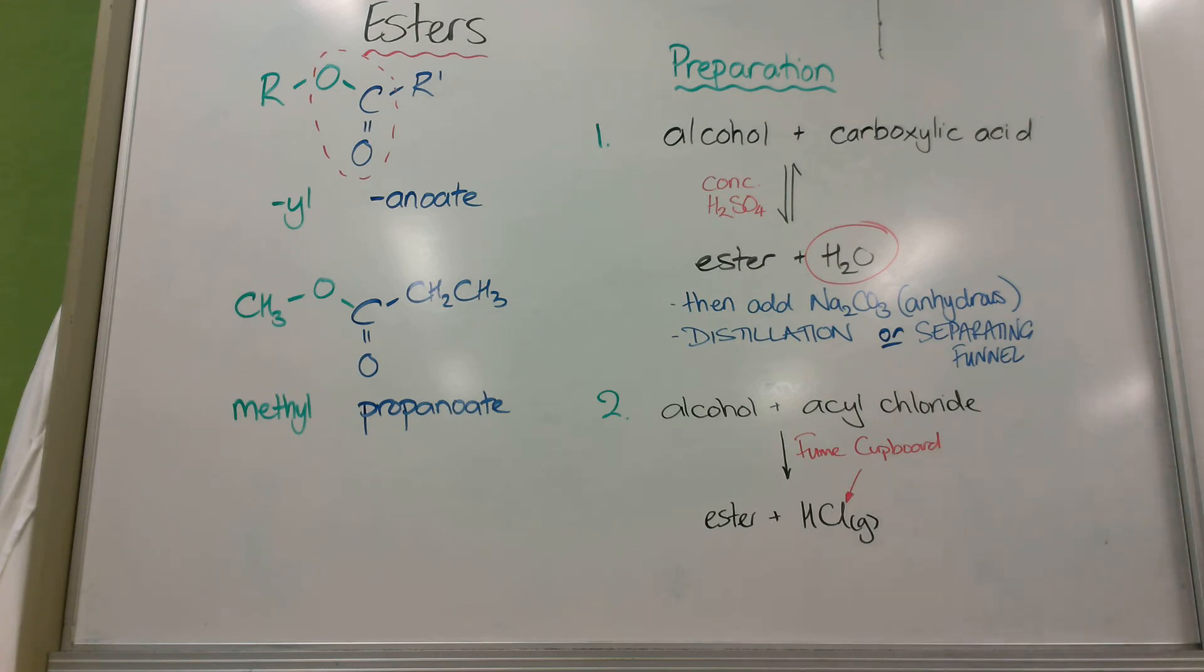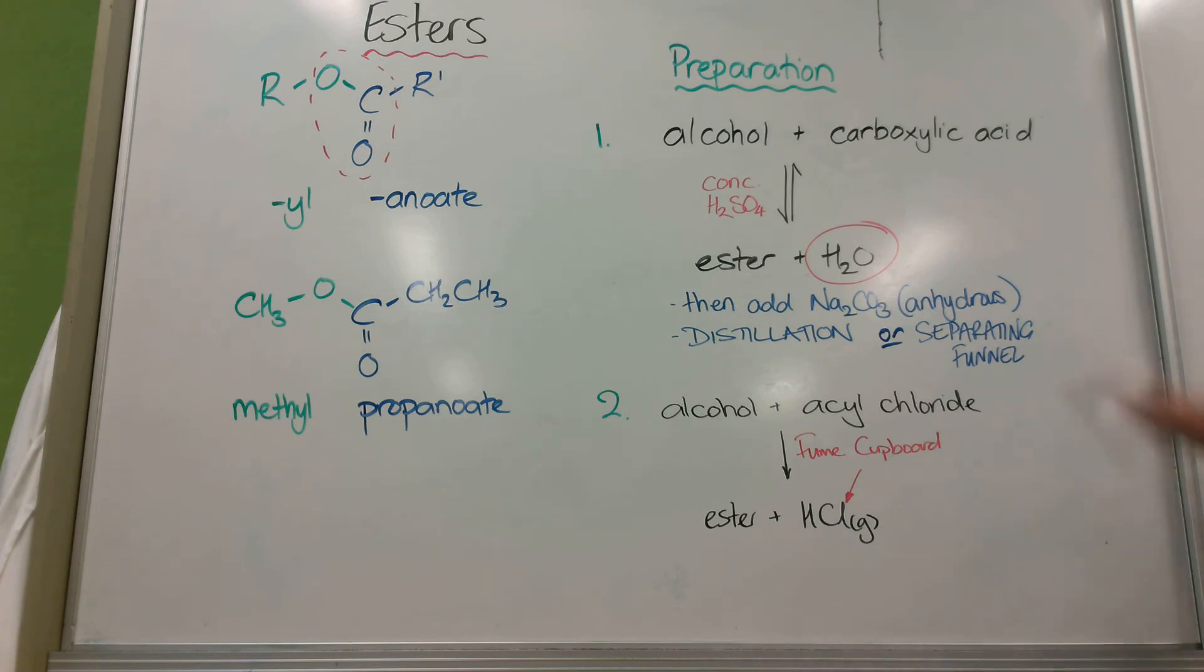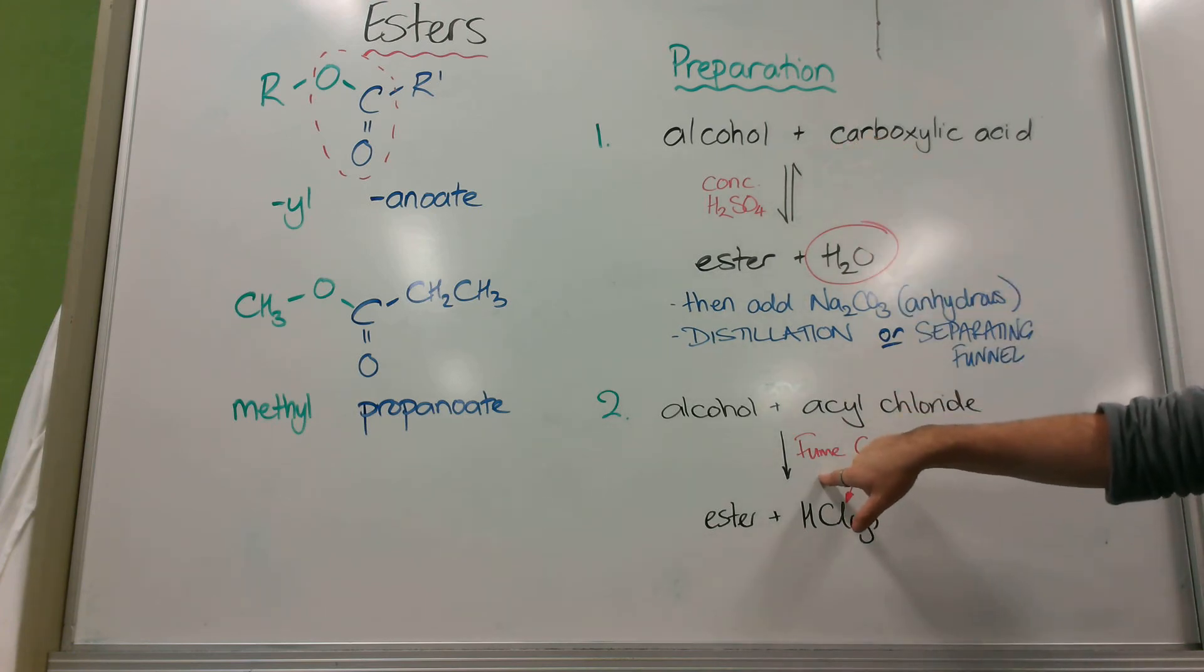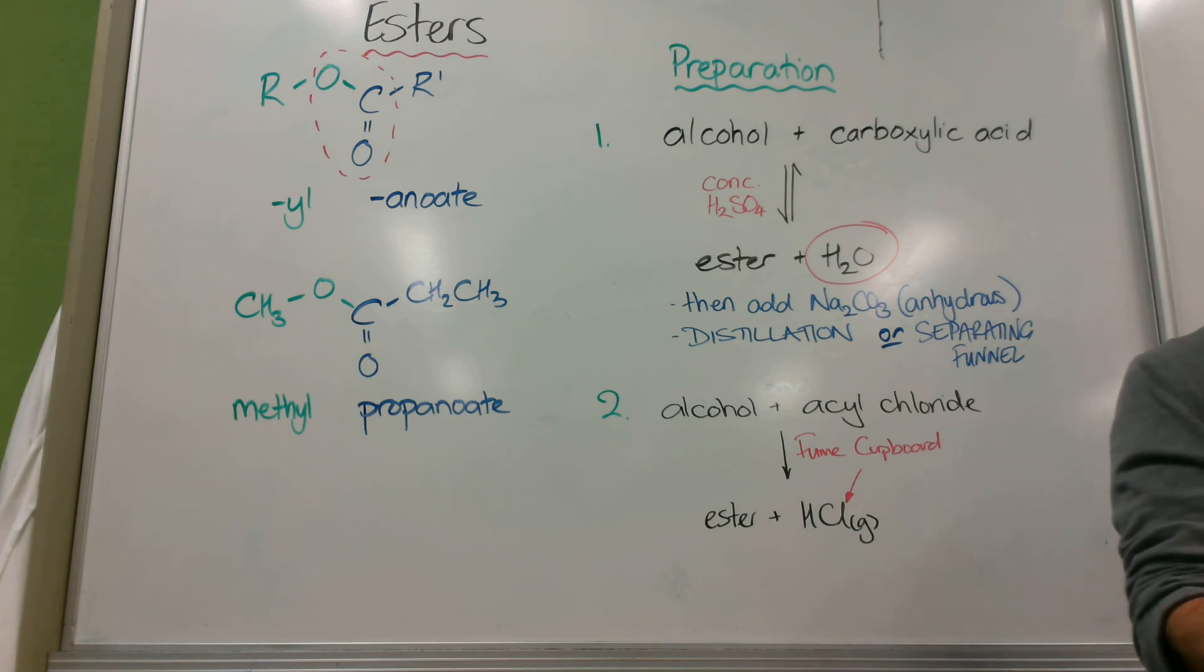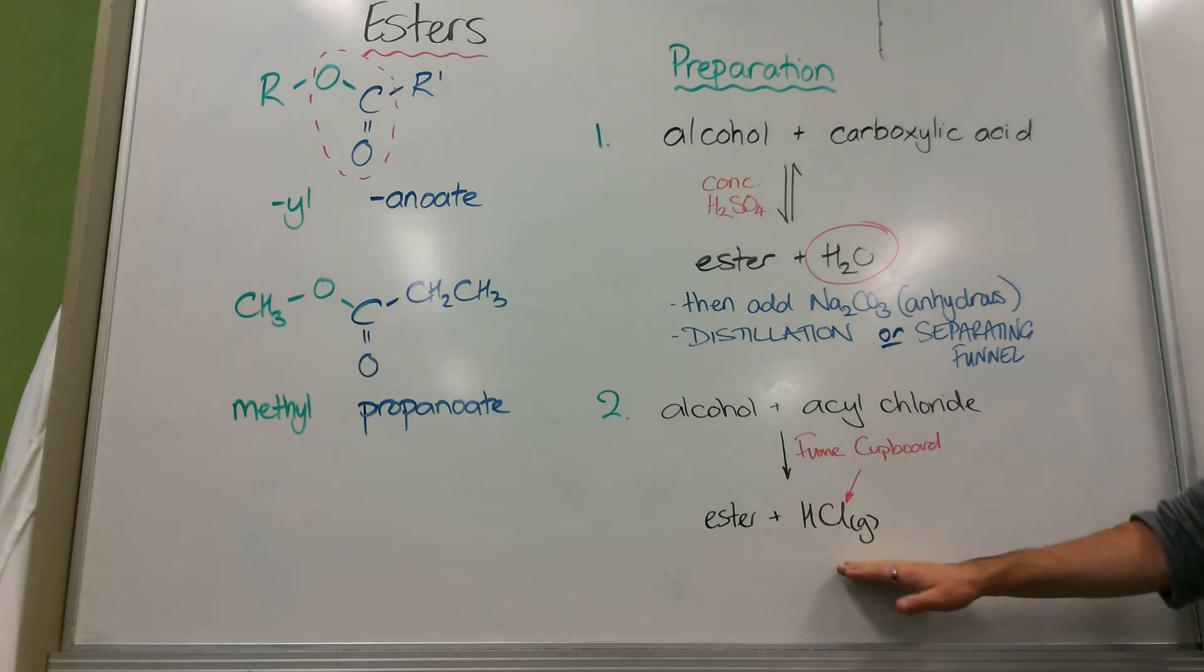So every time we use them, we have to do it with fume cupboard. So if you're asked to compare and contrast these, one's an equilibrium, one's a reaction. One requires a catalyst and a dehydrating agent and some further steps. This one just goes to completion and then you use a separating funnel. However, you need to do this in the fume cupboard and the reason is that HCl is acidic and dangerous.